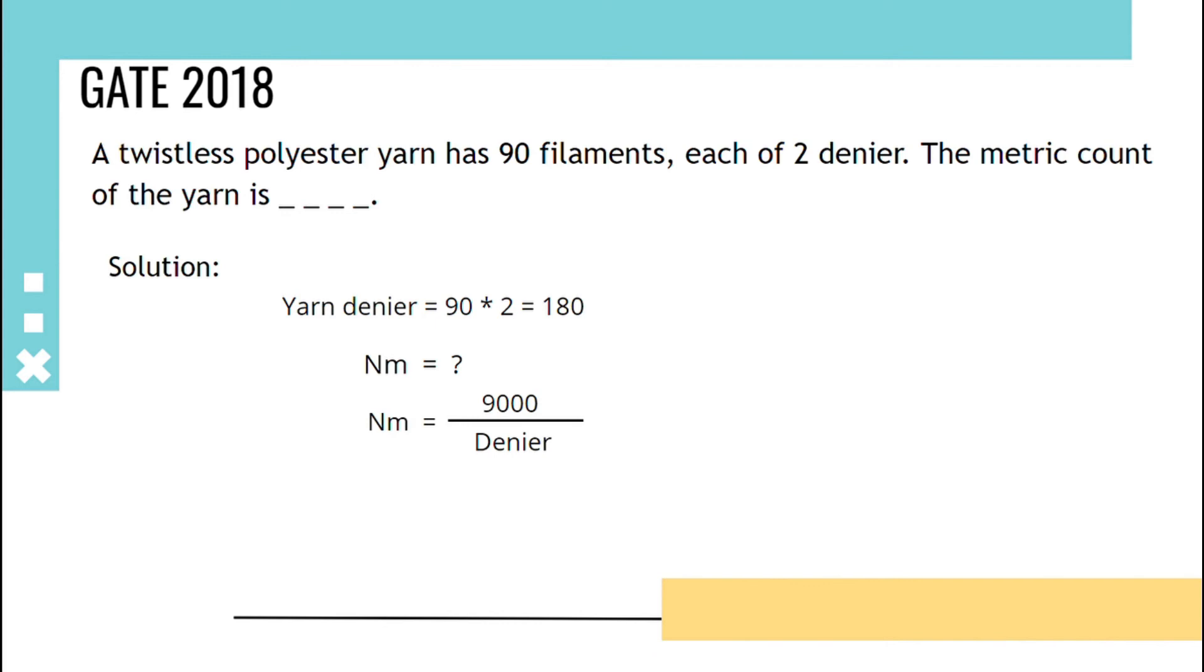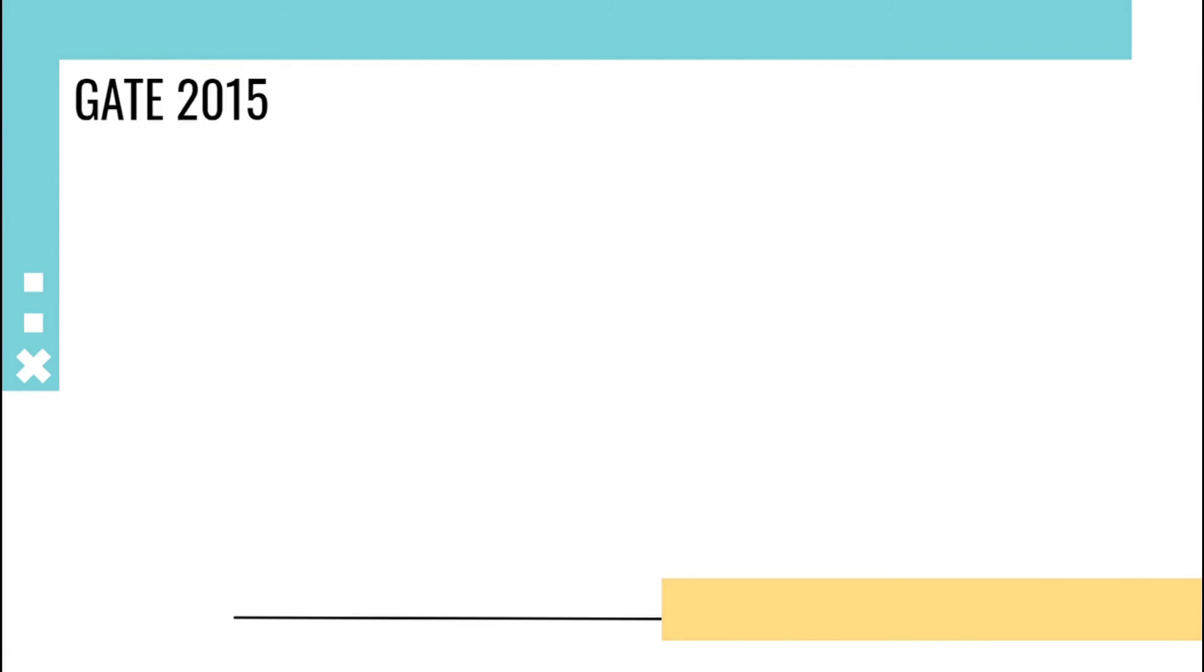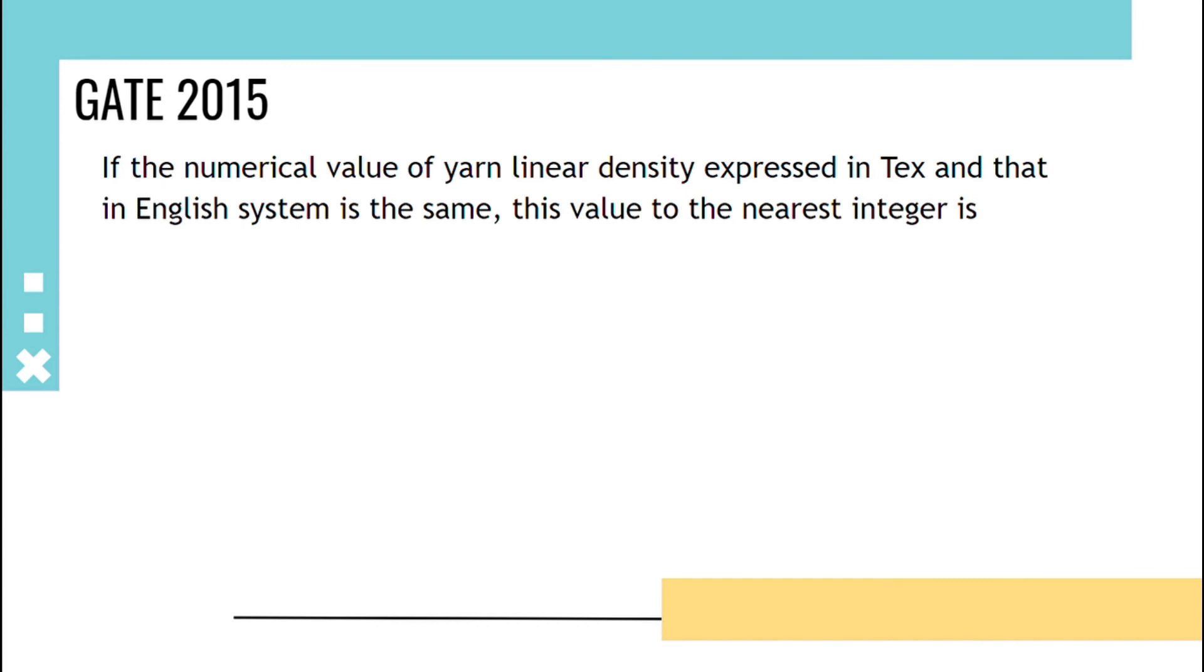The next problem is: if the numerical value of yarn linear density expressed in Tex and that in English system is the same, the value to the nearest integer is asked. Given that Tex count is same as English count, so let Tex count equals English count equals X.